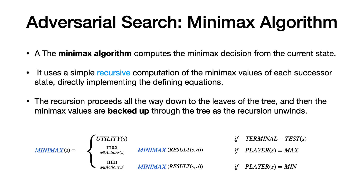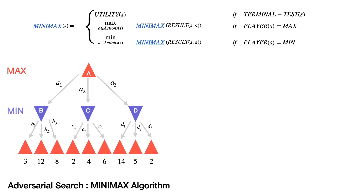Consider a tree with root node A. Actions a1, a2, a3 generate states B, C, and D respectively. At the next level, the player is Min. From B, actions b1, b2, b3 lead to terminal states with utility values 3, 2, and 8 respectively. Similar terminal states exist under C and D.